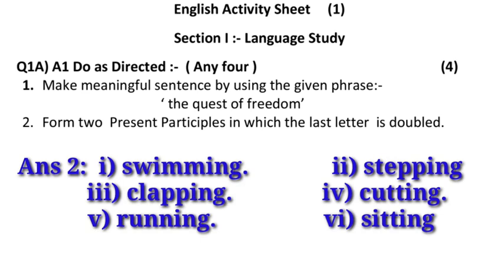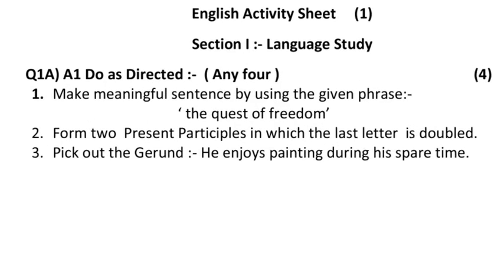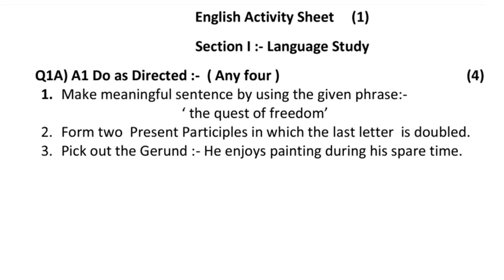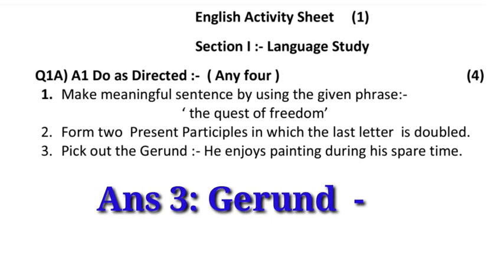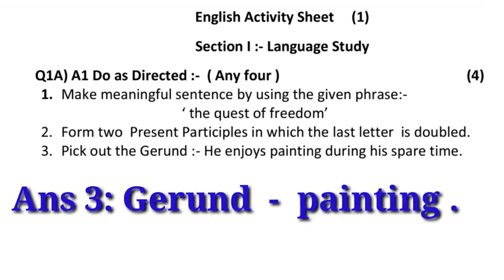Now let us see the third example: pick out the gerund. A sentence is given and you have to find the gerund. A gerund is nothing but the '-ing' form of a word. The sentence is: 'He enjoys painting during his spare time.' The gerund here is P-A-I-N-T-I-N-G, because only this word in the sentence is in the '-ing' form and functions as a noun. So it is the gerund.